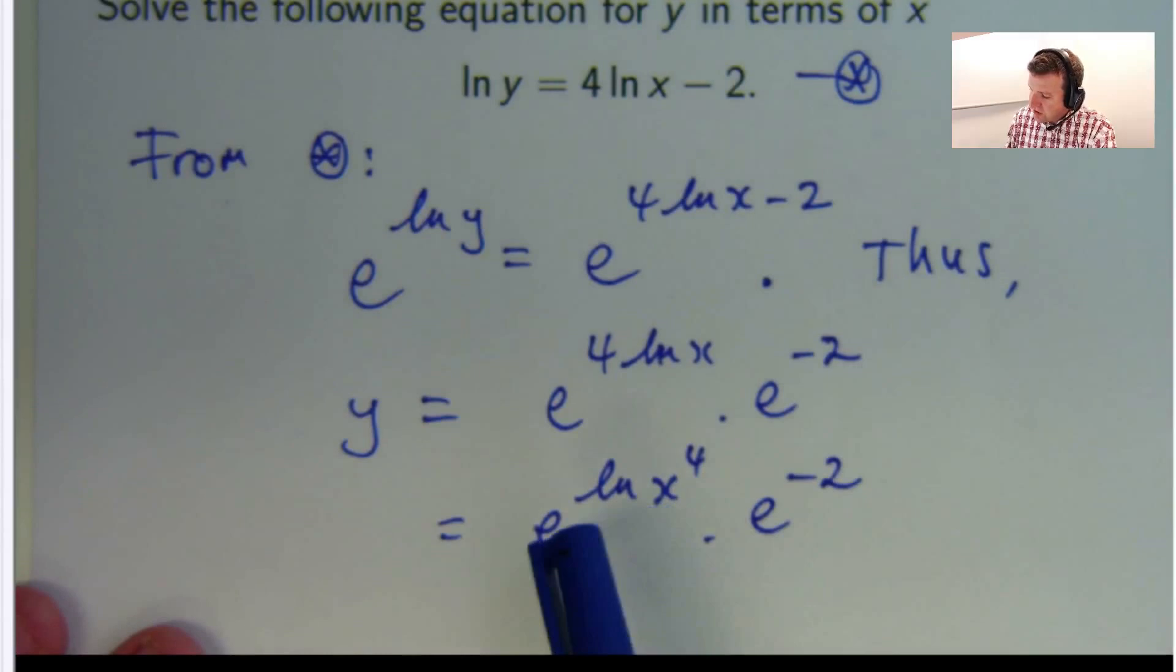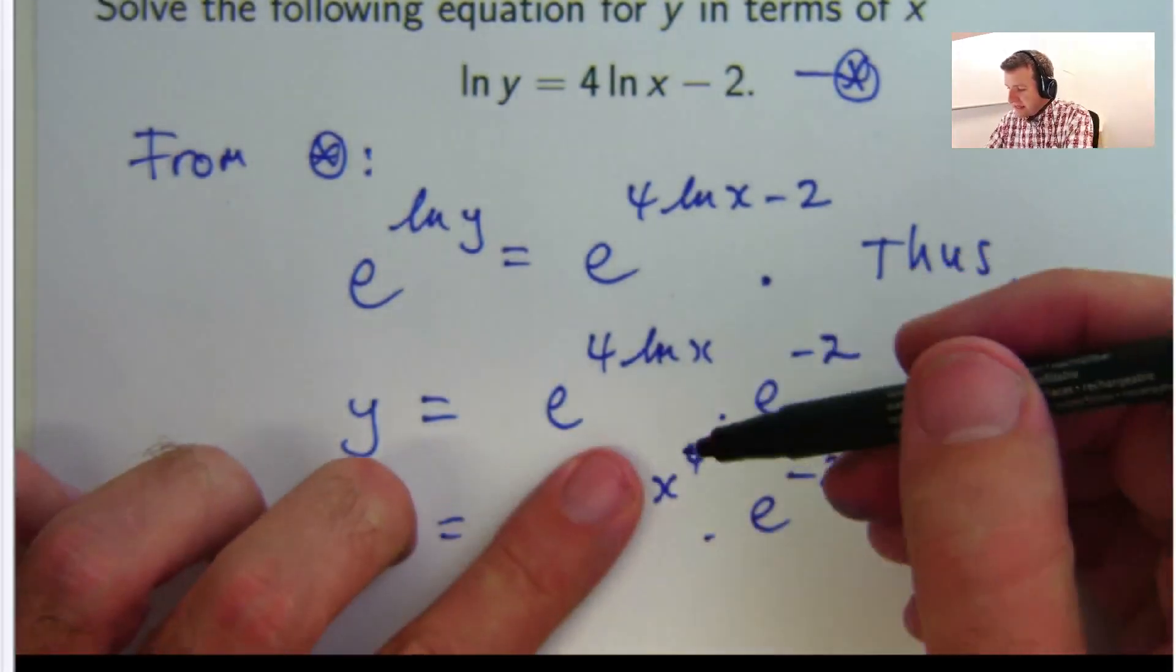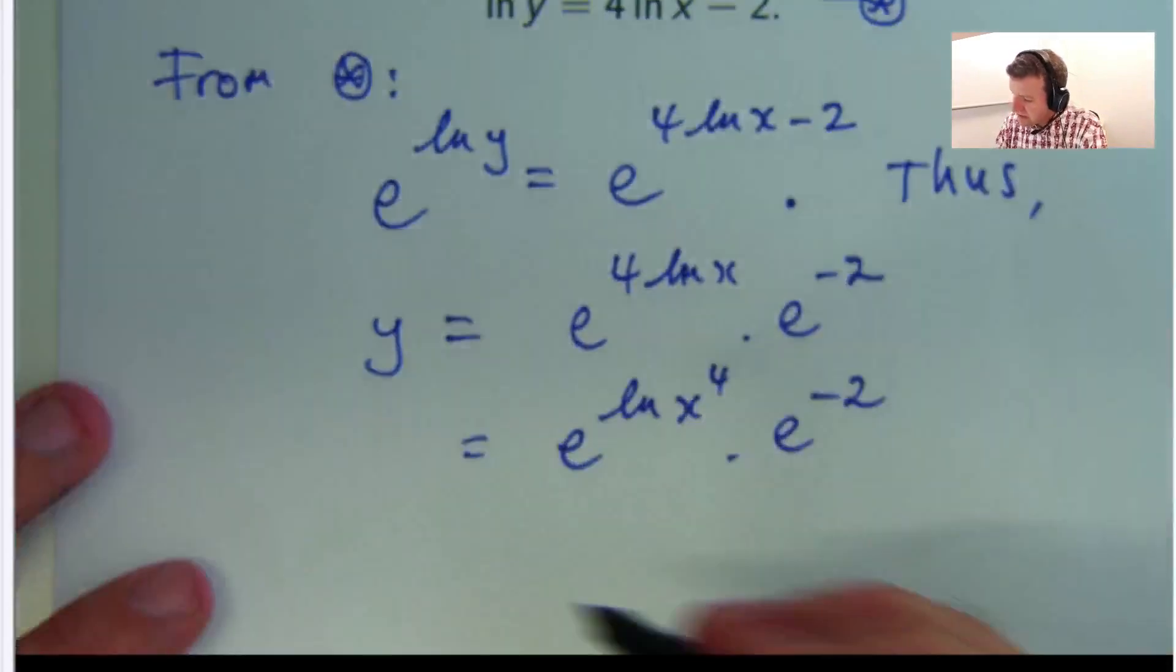And now look what we've got. We've got e to the log of something. They're opposite, so they cancel each other out, and the x to the 4 just comes down.